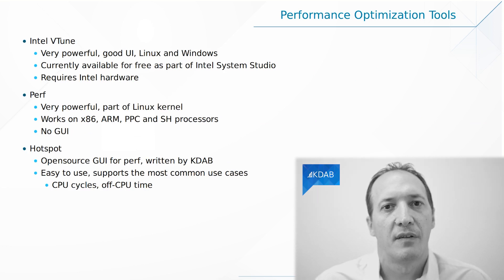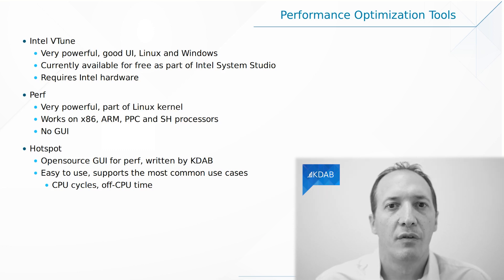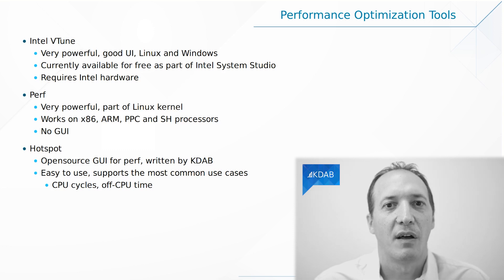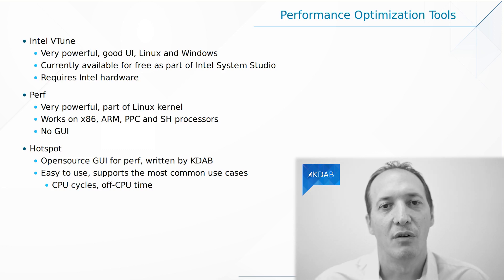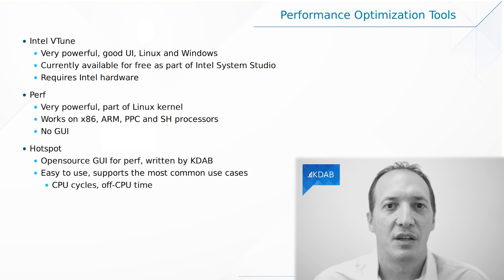Let's talk first about measurements of performance, specifically CPU and off-CPU performance. To do that, I can use VTune, which is made by Intel. It's a very powerful tool to do these things and has a very nice user interface. It exists for Linux and Windows, and it's free if you download it as part of Intel System Studio — don't look for it separately as VTune, but as part of the System Studio suite of tools; then it's actually free, even for commercial use. It requires Intel hardware, which means you can't use it on AMD CPUs or ARM embedded boards. That's one limitation of VTune, but apart from that, it's a very good tool.